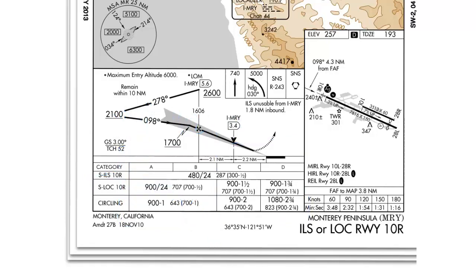Now let's take a look at the circling minima. Circling always requires a little more visibility and usually higher ceilings, due to the fact that you actually have to fly a traffic pattern around the airport and land. In this case, the circling MDA is still 900 feet. However, the visibility has increased to one statute mile, so the visibility has to be one mile or greater in order for you to execute the circling approach.